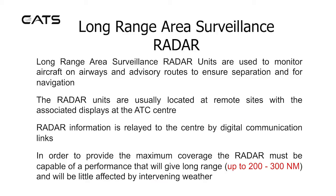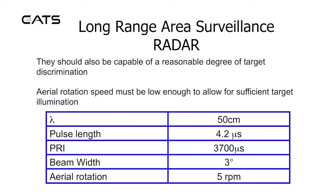Long range area surveillance radar units are used to monitor aircraft on airways and advisory routes to ensure separation and for navigation. The radar units are usually located at remote sites with associated displays at the ATC centre, with radar information relayed by digital communication links. In order to provide maximum coverage, the radar must give long range up to 200 to 300 nautical miles, be little affected by intervening weather, allow for reasonable target discrimination, and have a rotation speed low enough to allow sufficient target illumination.